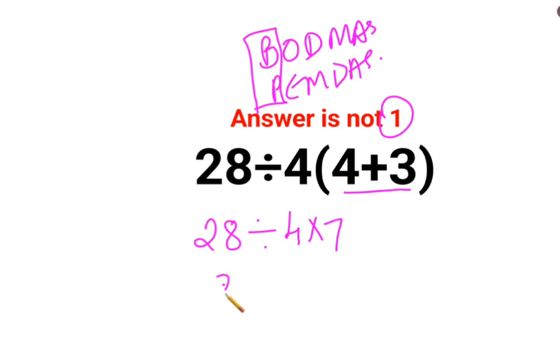A lot of people think that this is so easy. 28 divided by 4 into 7 is 28, answer should be 1. No, that is incorrect.